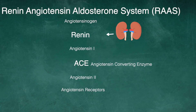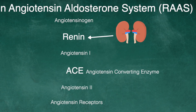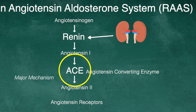Renin is released from the kidney. Renin goes through this complex process cleaving angiotensinogen into angiotensin 1. Angiotensin 1 is then converted by ACE, or angiotensin converting enzyme, into angiotensin 2. This process occurs through many different pathways, but ACE is the major mechanism.